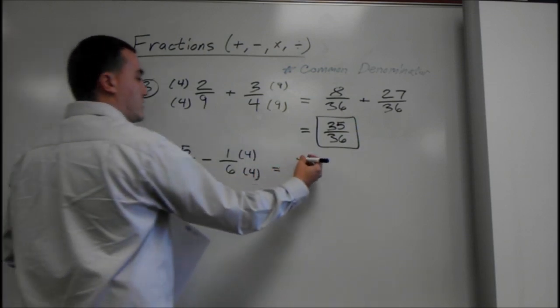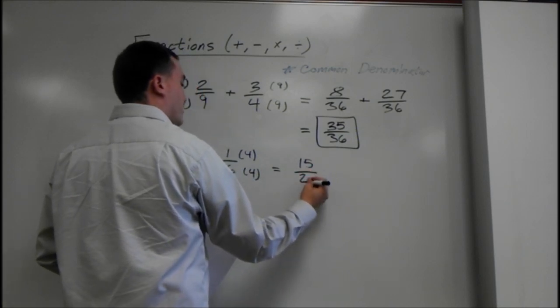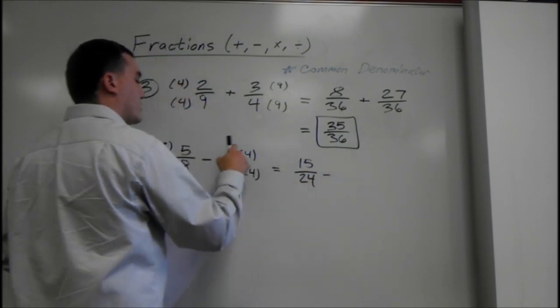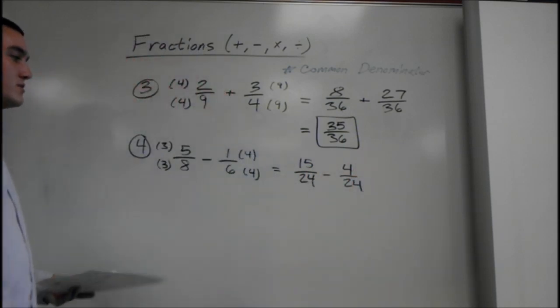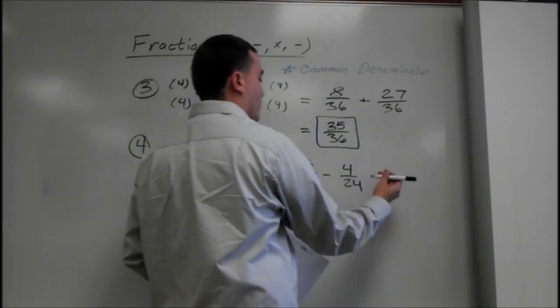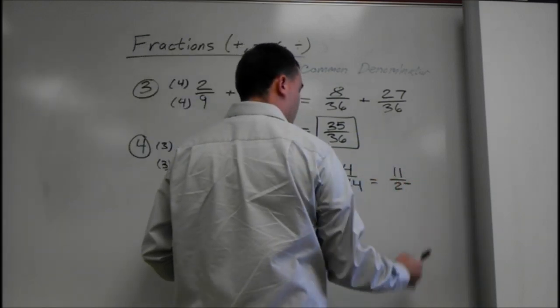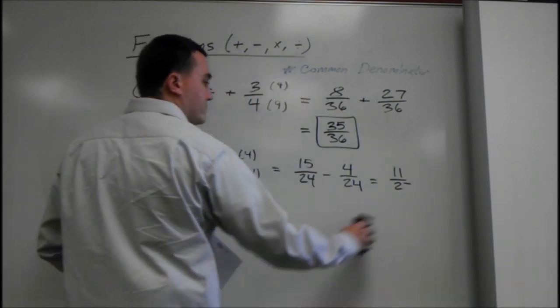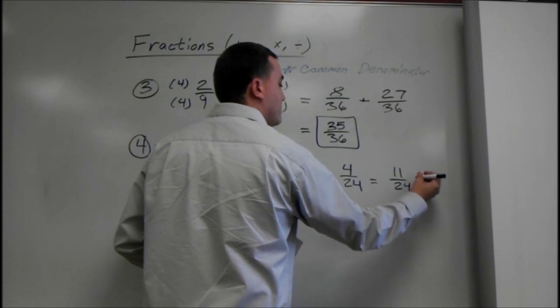3 times 5 is 15 over 24 minus 1 times 4 is 4 over 24. And then you just subtract the tops. 15 minus 4 is 11 over 24. And that will be it for that one.